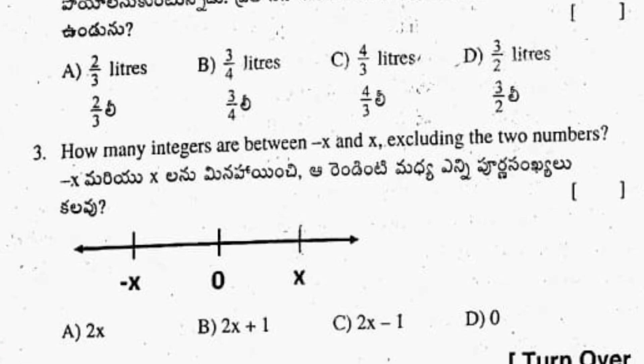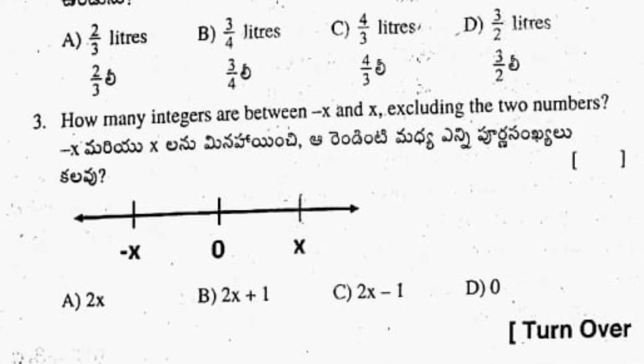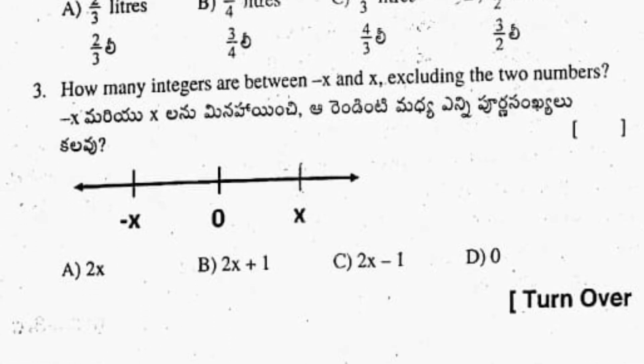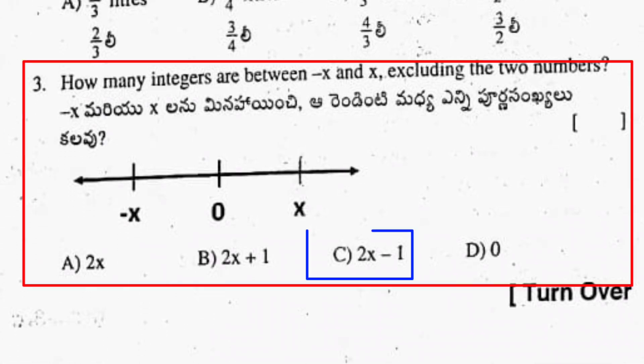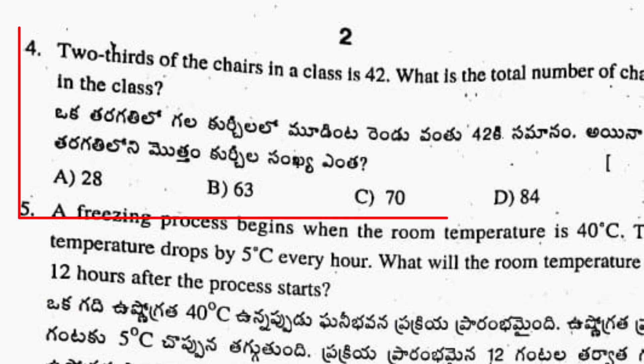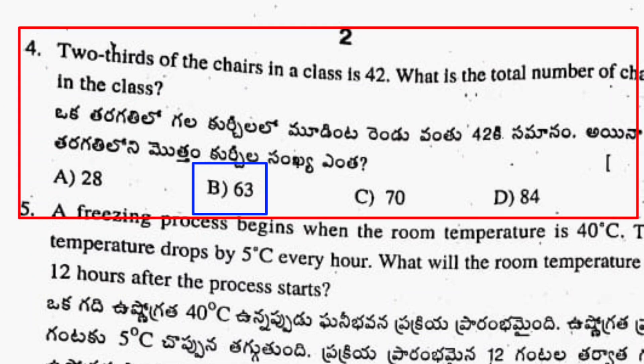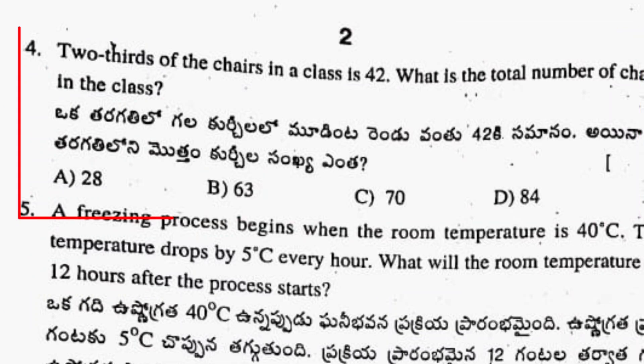Third question is: how many integers are between minus x and x, excluding the two numbers? Option C is the correct answer: 2x minus 1. Fourth question: option B is the correct answer.